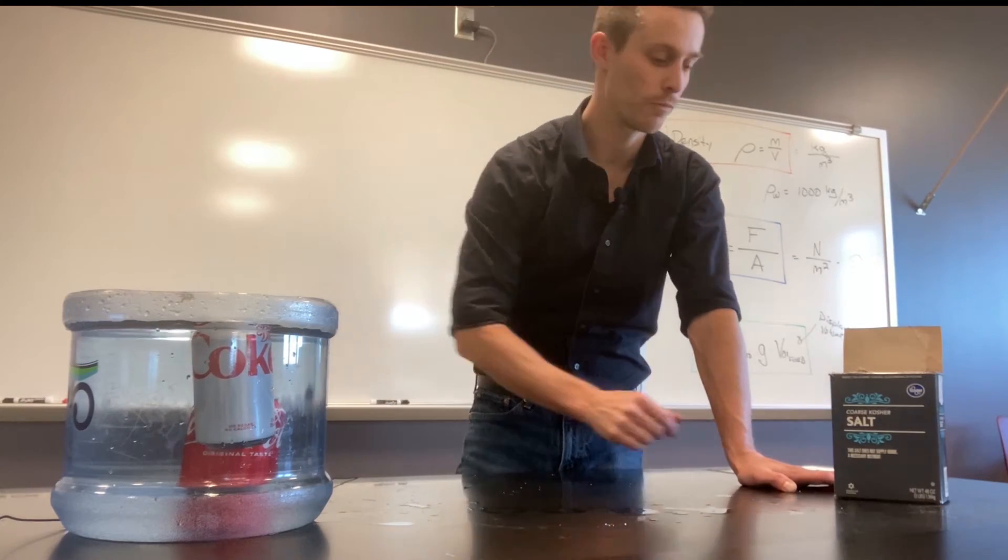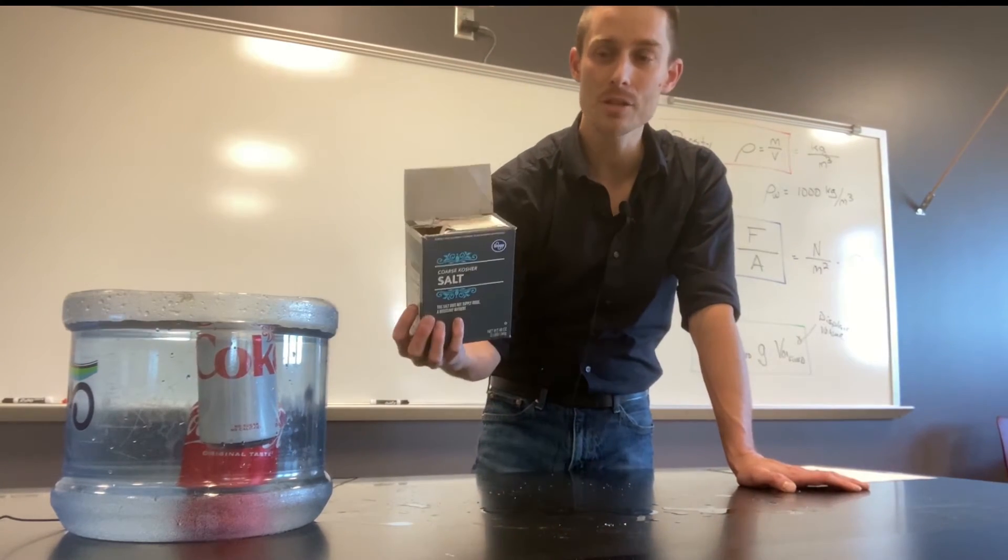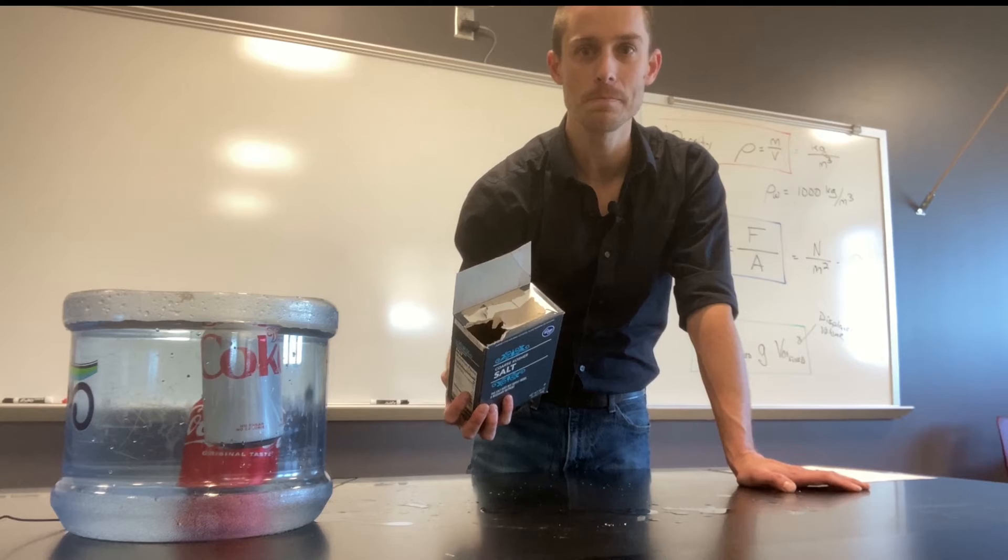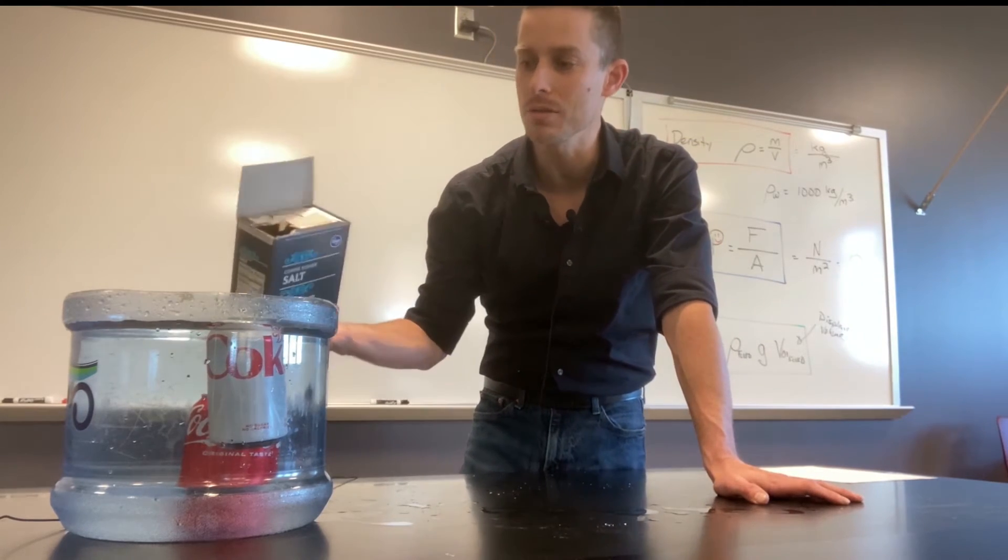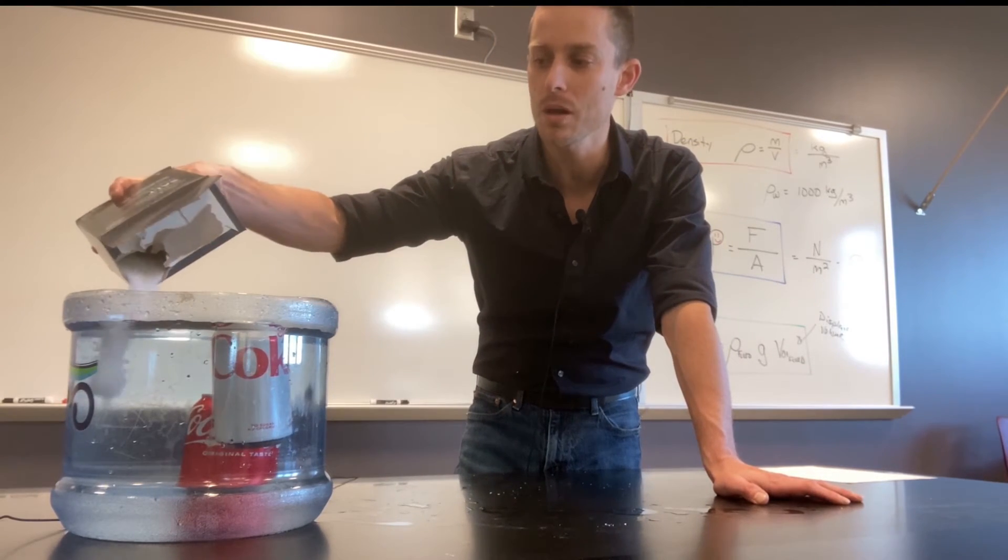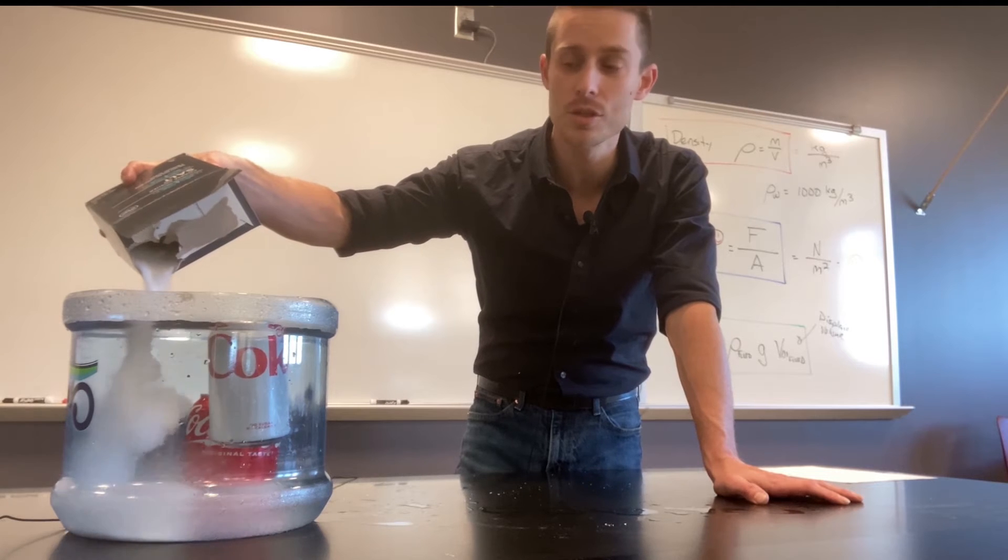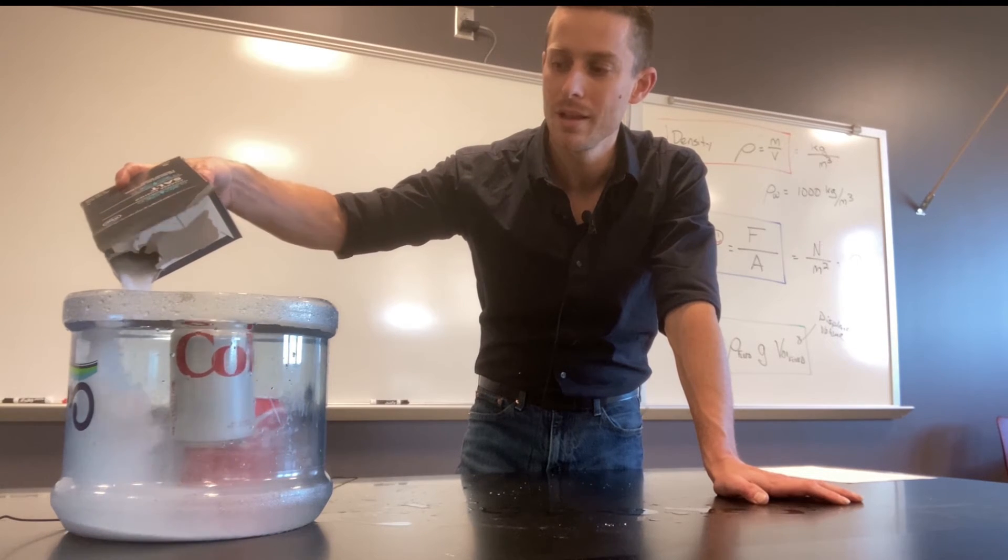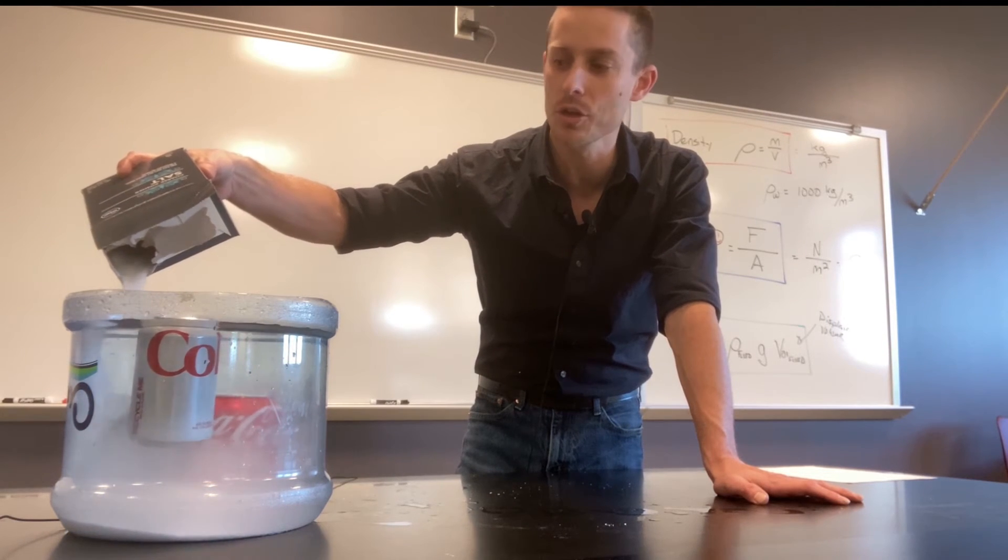Now if we want to make the regular Coke float, what we can actually do is change the density of the water. So what I'm going to do is I'm going to take some salt and add it to the water. You see, when you dissolve salt in water, the density of the water increases.